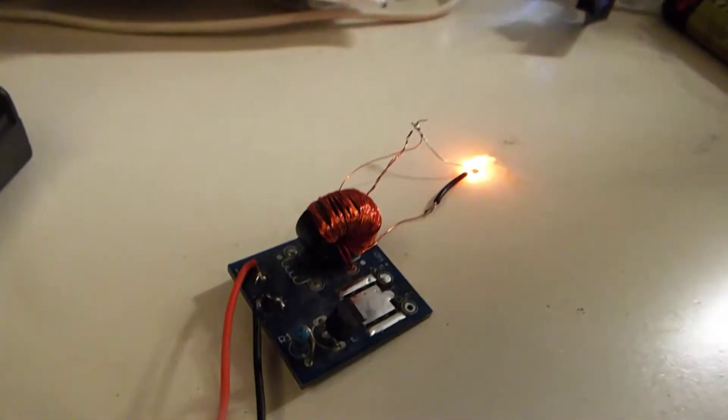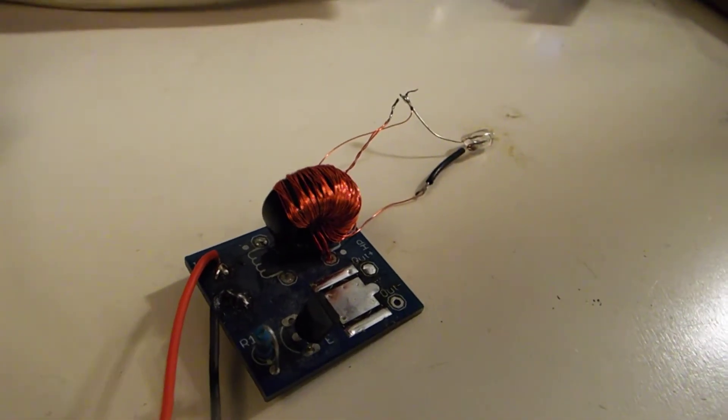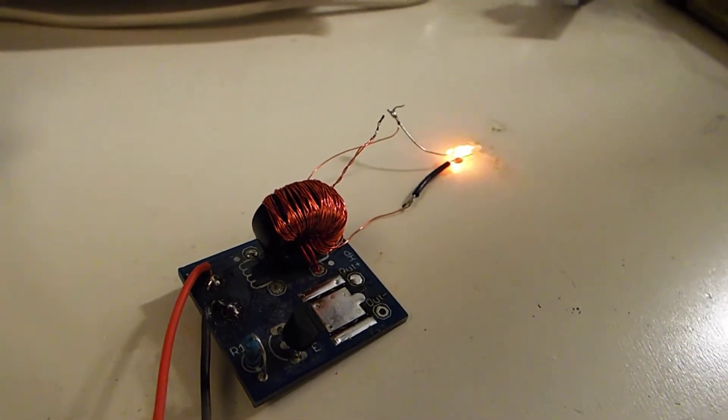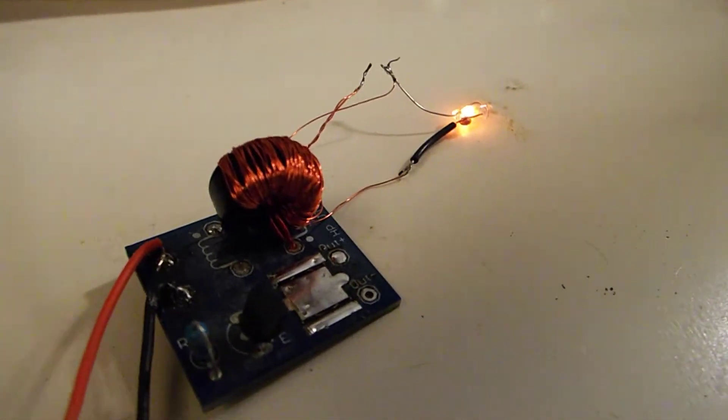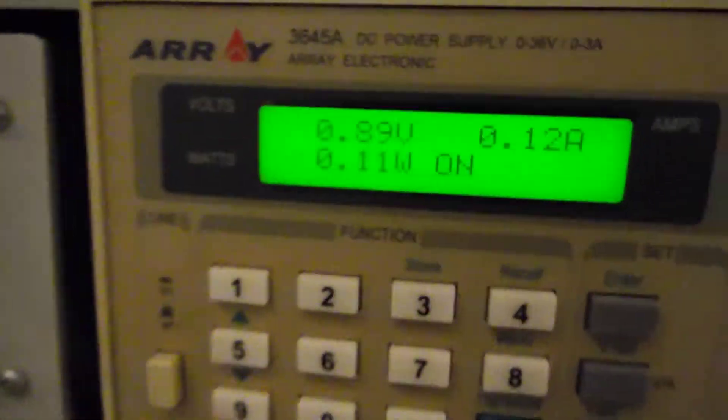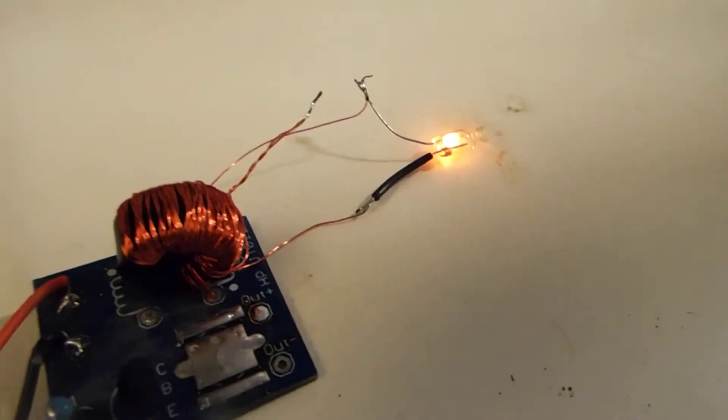Let me turn down the supply until the bulb turns off. All right, turn it back on. So at 0.9 volts input, we're drawing about 120 milliamps and the neon bulb is still lit.